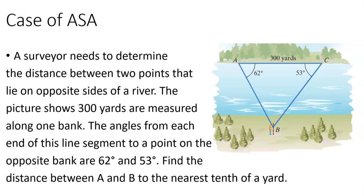All right. So let's take a look at two application problems. This says a surveyor needs to determine the distance between two points that lie on opposite sides of a river. The picture shows 300 yards are measured along one bank. The angles from each of the line segments are 62 and 53. Find the distance between A and B to the nearest tenth of a yard. So he can figure out how far it is from point A to point C. Here's point A. There's point C. So they've already measured 300 yards. He knows the angle. So he could put a stake in the ground on the other side of the river, and he can measure that from angle A, it's 62 degrees from that stake. Then he can walk over to point C and say, it's 53 degrees from there, but he wants to know how far it is from A to B.